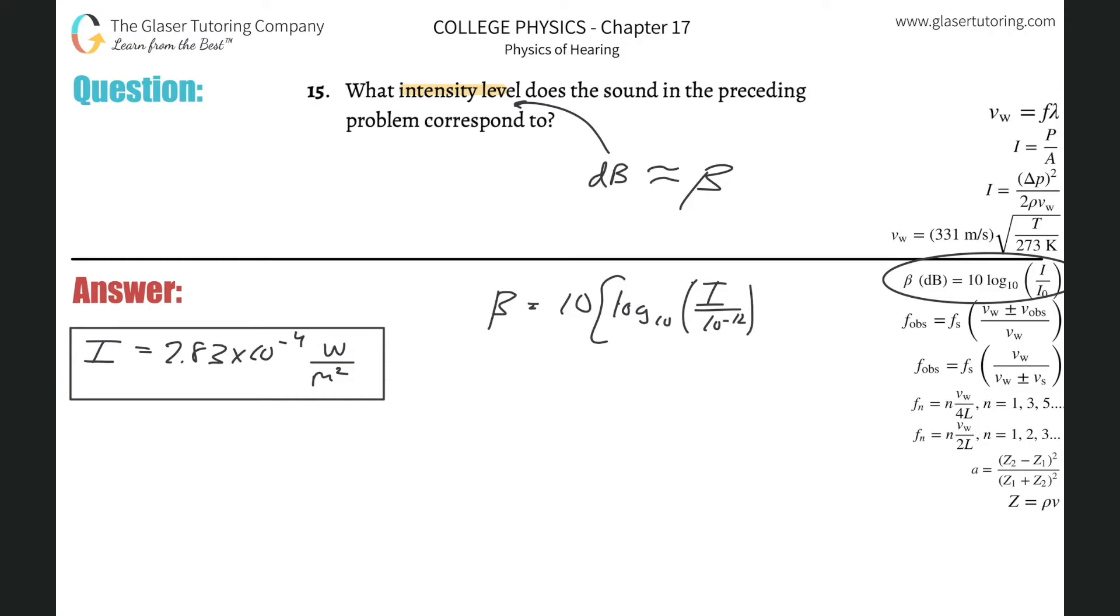Now all we have to do is basically just plug this on in, right? So it's going to be 10 multiplied then by log base 10 of then I, which was 2.83 times 10 to the minus 4th, all then divided by 10 to the minus 12th. Close those parentheses, and we're just going to plug it in.